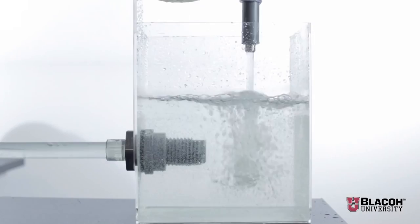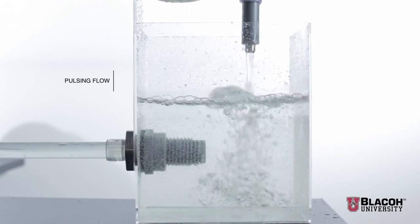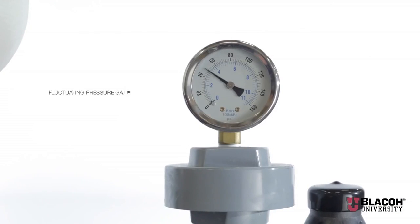You will notice that the flow is pulsing as it comes out the discharge and that there is a very large swing in pressure on the pressure gauge. The flow actually stops at every rotation of a roller shoe.